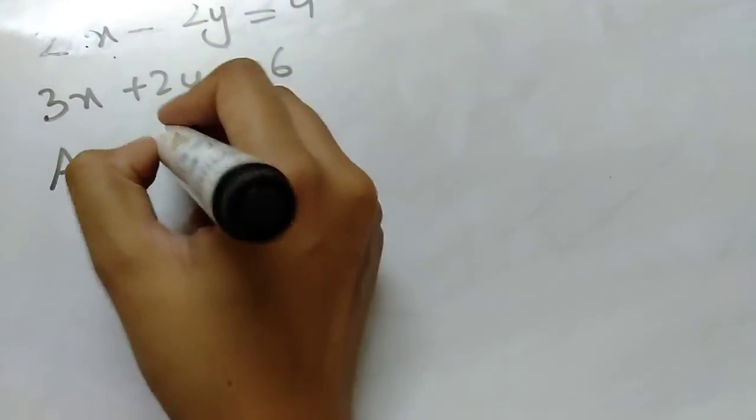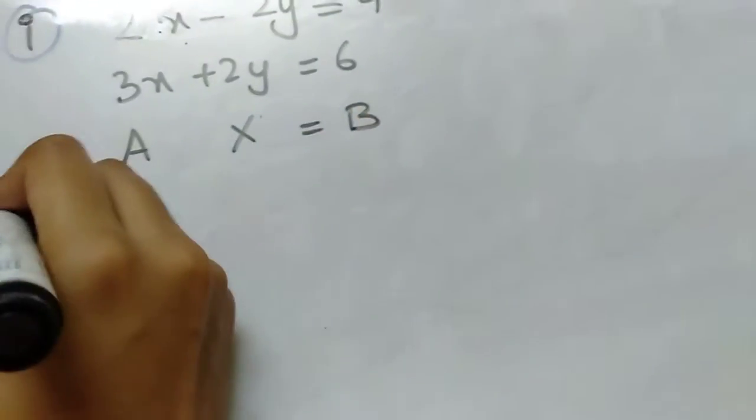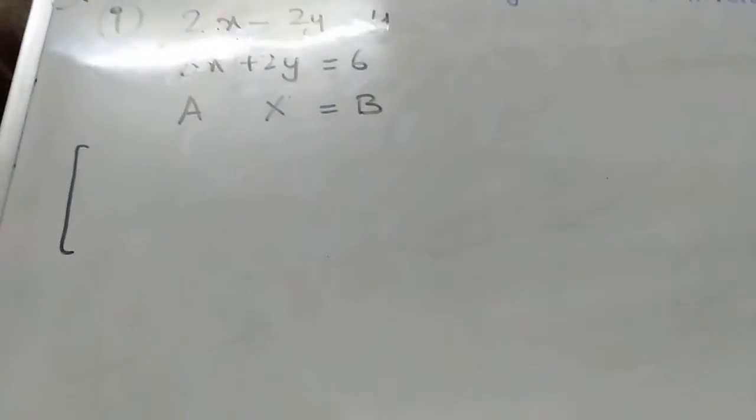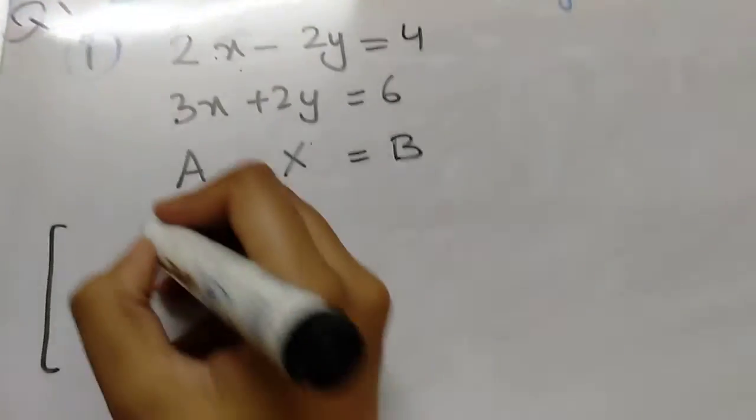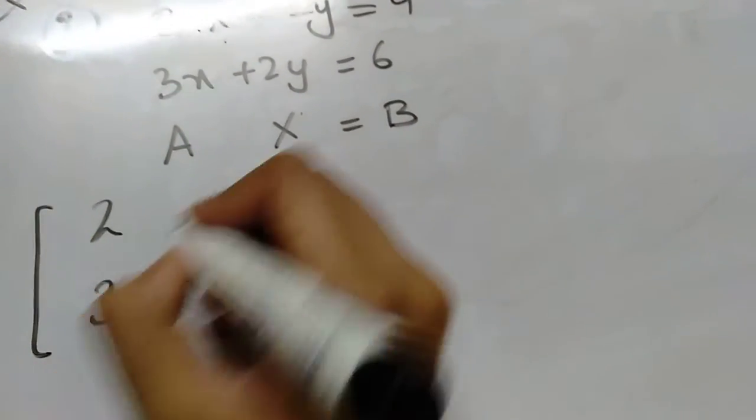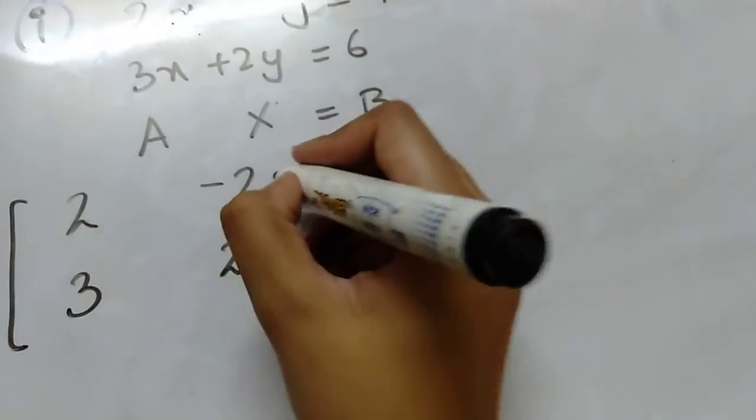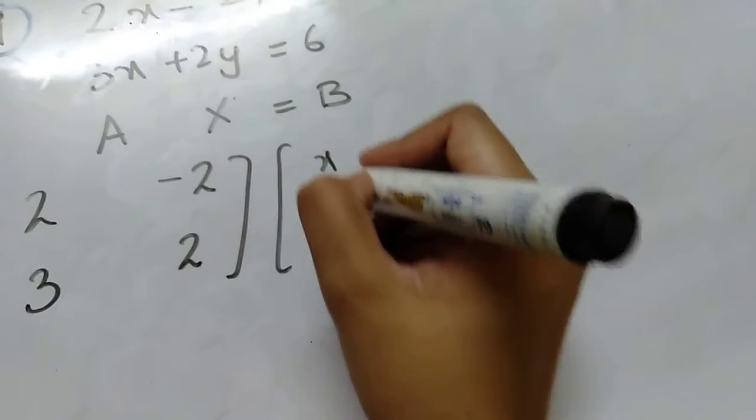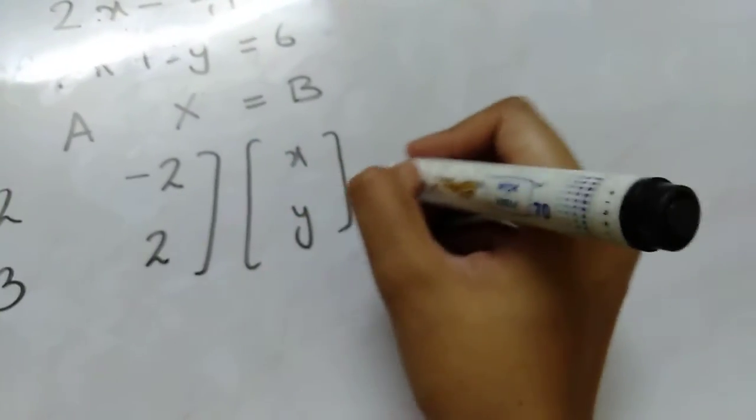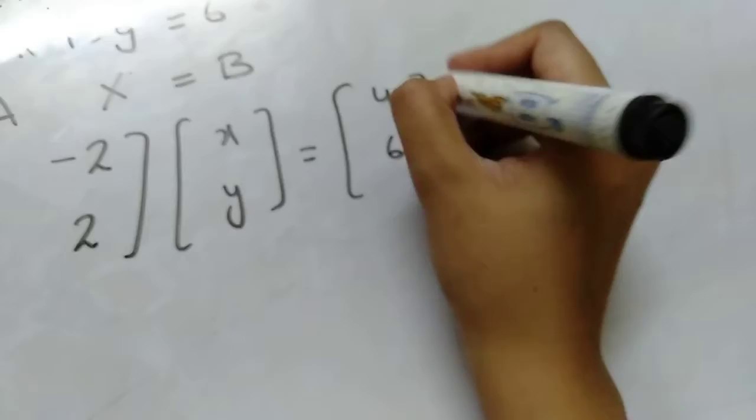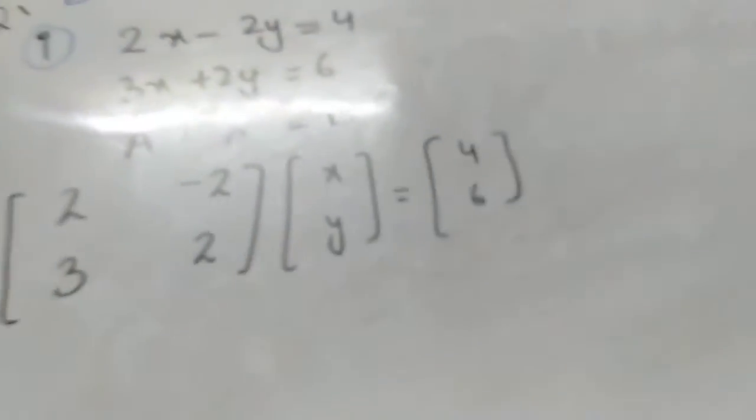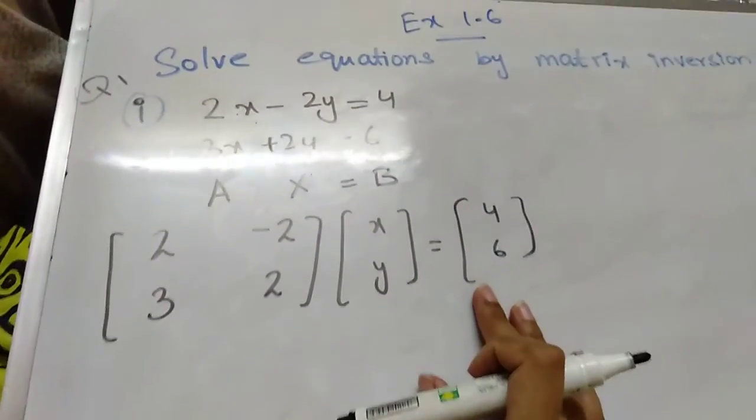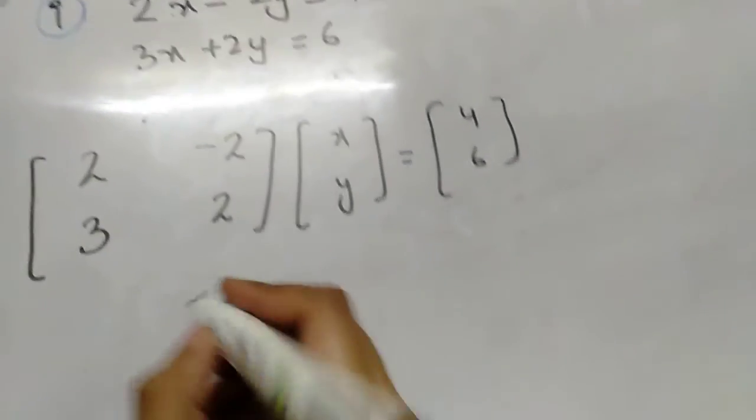We will convert it in this form: AX equals B. Our A matrix contains the coefficient terms with the variables: 2, 3, minus 2, and 2. X is always the variable elements and B is always the constant terms.